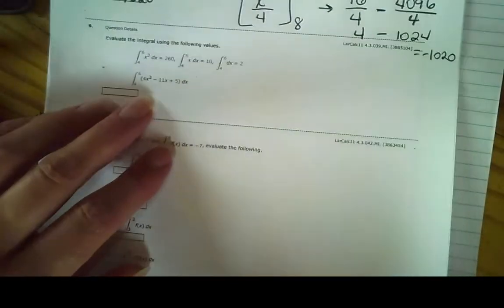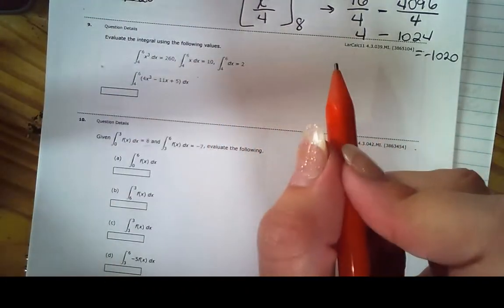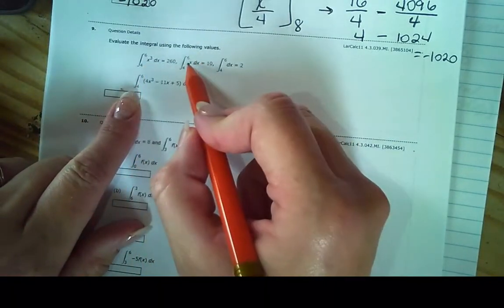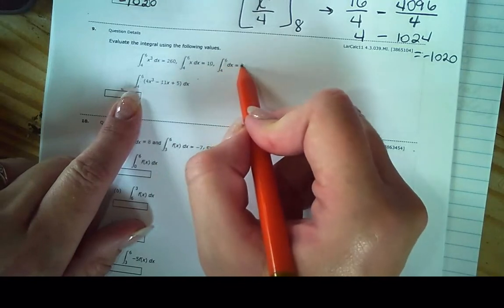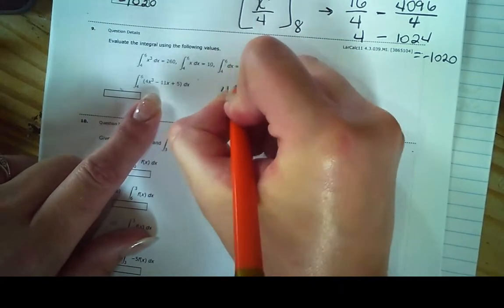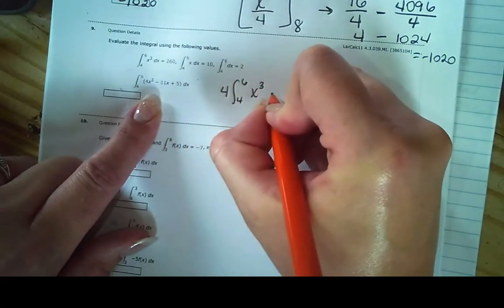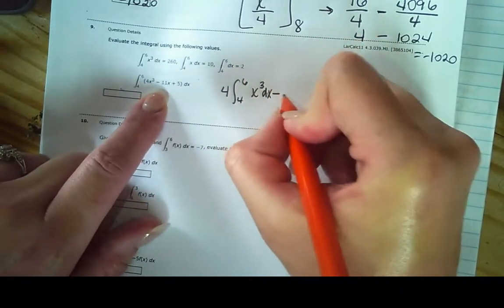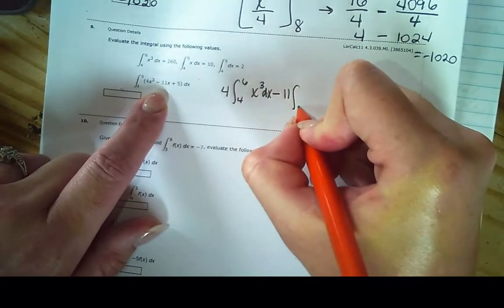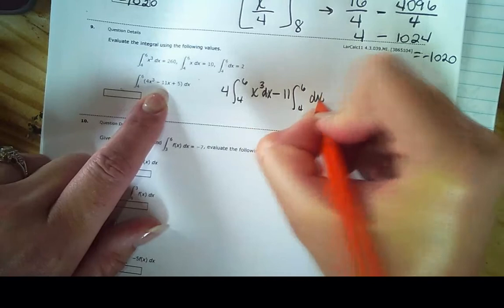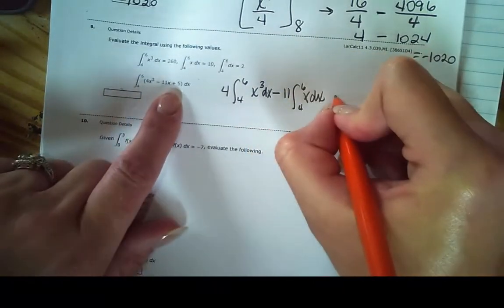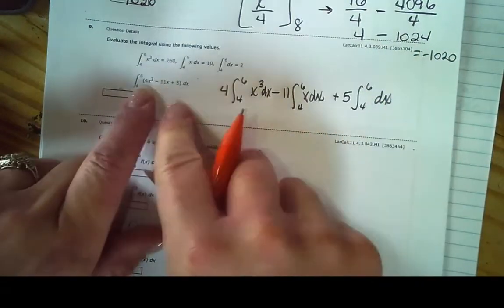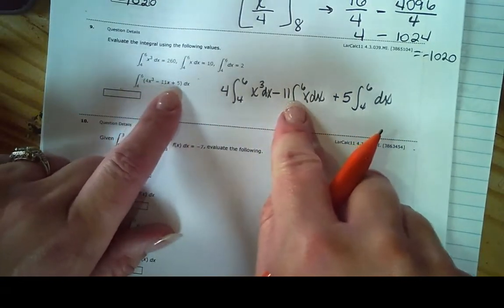Okay, so let's do this one rapidly. I have from 4 to 6, I know that x to the 3rd is 260, I know that x is going to give me 10, and I know that 1 is going to give me 2. So if I rewrite this, I have 4 times the integral from 4 to 6 of x to the 3rd dx, minus 11 times the integral from 4 to 6 of x dx, plus 5 times the integral from 4 to 6 of 1 dx. So all I did was pull the 4 out front, I pulled the negative 11 out front, and I pulled the 5 out front.